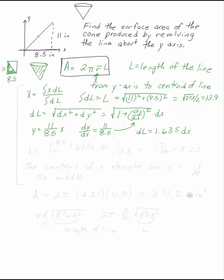Now I can take the derivative. x̄ is the integral from 0 to 8.5 of 1.635x dx divided by the integral dl, which was 13.9. If you work that out, you get x̄ is 17 over 4, which is 4.25.